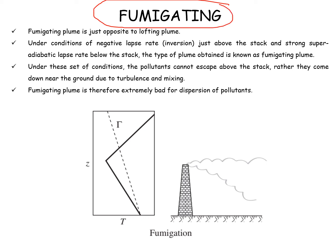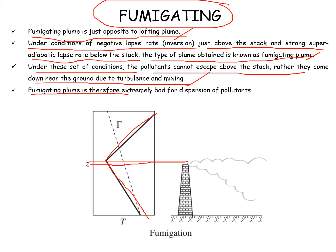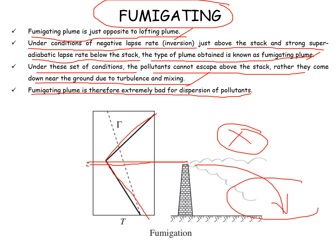Now the fumigating type of plume, which is just opposite to the lofting one. Under the condition of negative lapse rate inversion just above the stack, and a strong superadiabatic lapse rate below the stack, a fumigating plume is obtained. Below the stack there is strong superadiabatic, and above there is a negative inversion lapse rate. The pollutant cannot escape above the stack; rather it comes down near the ground due to turbulence and mixing. Fumigating is therefore extremely bad for dispersion of pollutants because only downward movement takes place, making it very harmful to the downwind population.